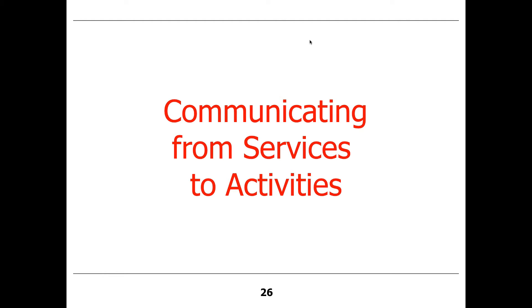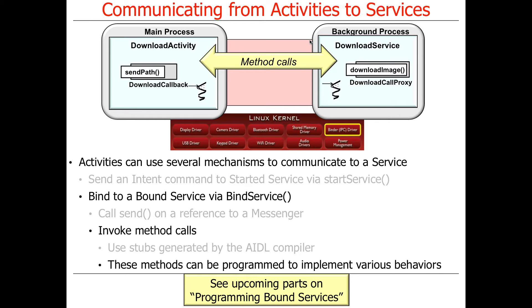So that's basically how you communicate from activities to services. As you can see, you can use an intent with a started service, or you can use a bound service and then either use messengers explicitly to pass messages — which is what you're doing in assignment four — or you can use AIDL calls, which make method calls that go between address spaces.